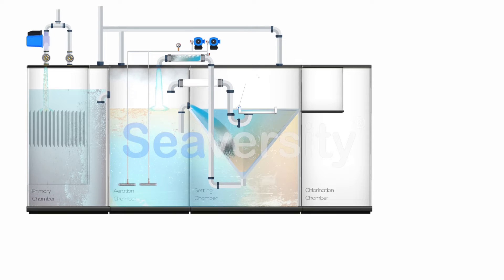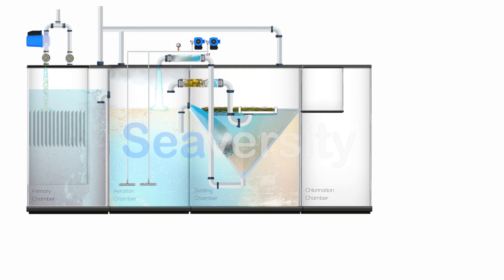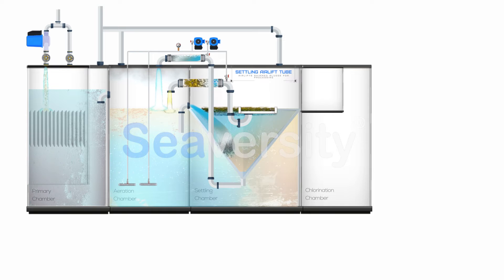The surface skimmer is a device used to remove any floating debris or scum from the water surface. Similarly, an airlift is specifically used to return the skimmed debris back to the aeration tank for further processing, ensuring a clean effluent discharge.